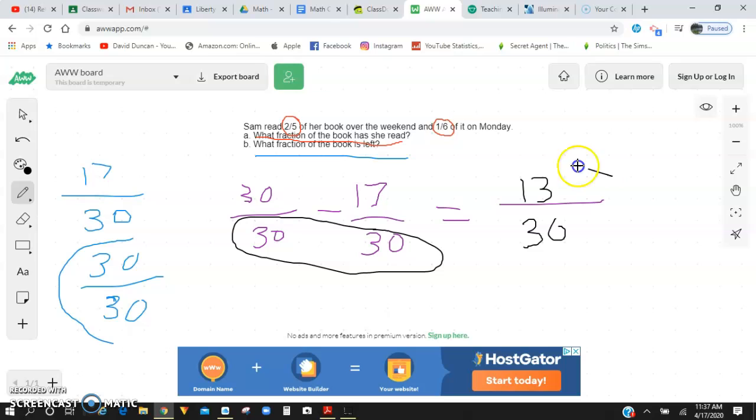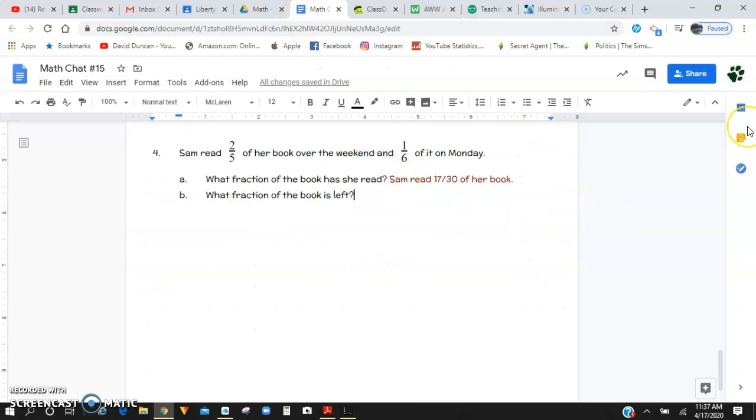And again, that is smallest form because there's no factor that can go into 13 that can also go into 30. That's the smallest form of the fraction. So my answer is going to be Sam has 13 30ths of her book left to read.